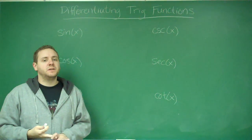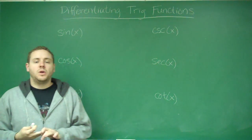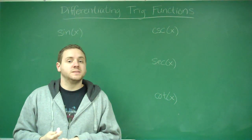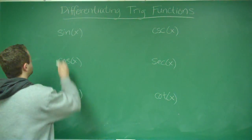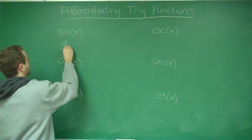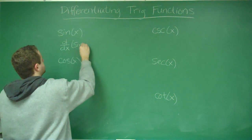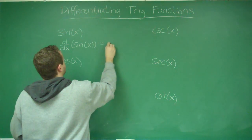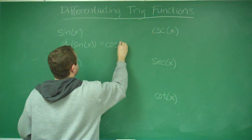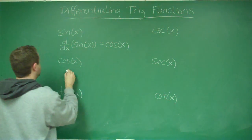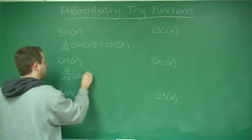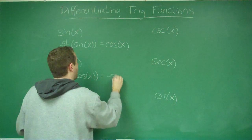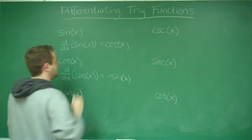Now, for these functions' derivatives, it would be best to just memorize them. For sine and cosine, you're going to have to memorize them. The derivative of sine of x is always cosine of x, and the derivative of cosine of x is always negative sine of x.